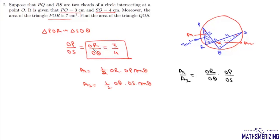Now OR/OQ is 3/4, and OP/OS is also 3/4. So A1/A2 = 9/16. The value of A1 is 7, so 7/A2 = 9/16. Therefore, the area of triangle QOS is A2 = 7×16/9 = 112/9 cm².